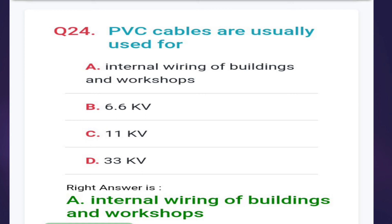Next: PVC cables are usually used for internal wiring of building and workshop, 6.6 kV, 11 kV, or 33 kV. The correct answer is option A, internal wiring of building and workshop.